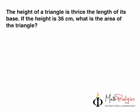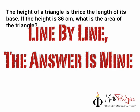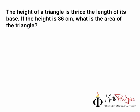Today's question of the day is very simple, something to do with what I love, triangles. So the height of a triangle is thrice, that means three times the length of its base. If the height is 36 cm, what is the area of the triangle? Remember, all you have to do is use the quote of the week, which is line by line, the answer is mine. Read the first line: The height of a triangle is thrice the length of its base. Stop. If the height is 36 cm, stop. What is the area of the triangle? Very simple.